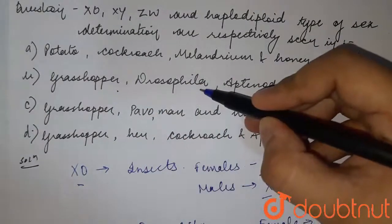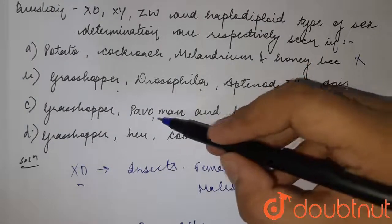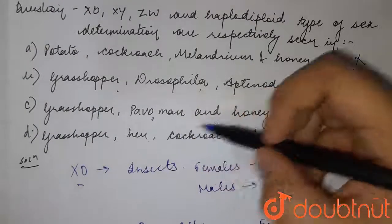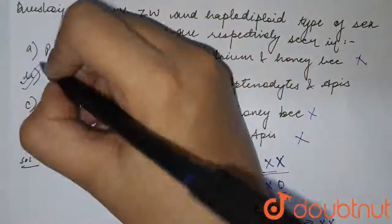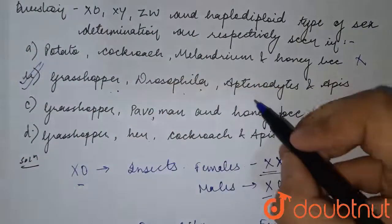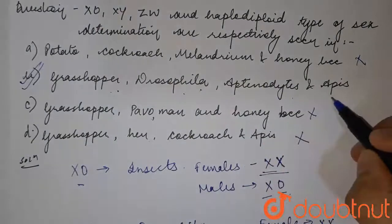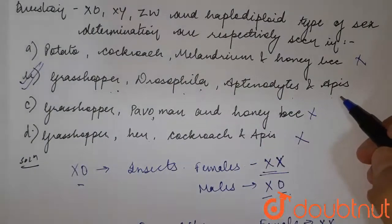So that means the answer to the question is option B: grasshopper, Drosophila, Aptenodytes, and Apis. The answer is option B. Thank you.